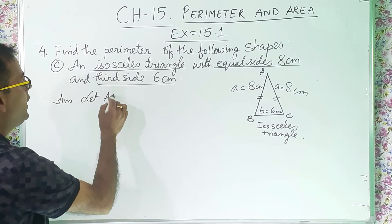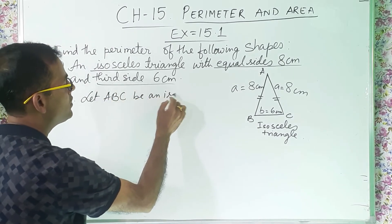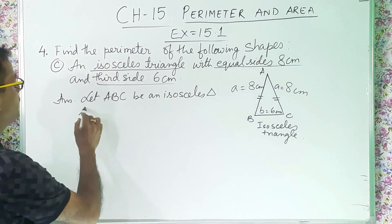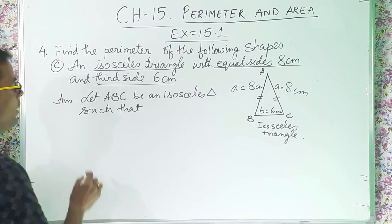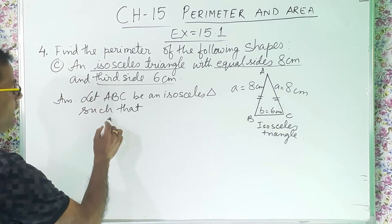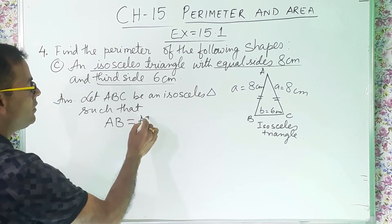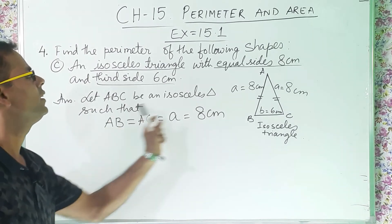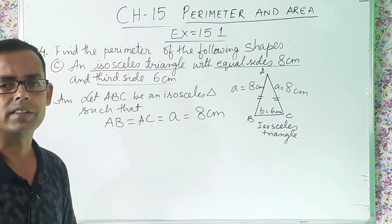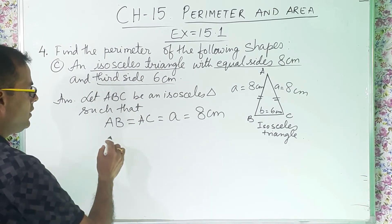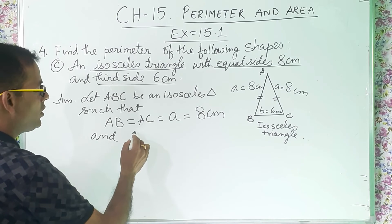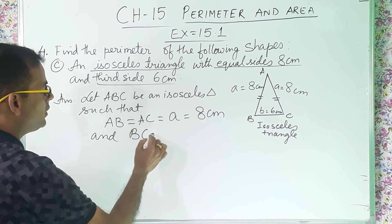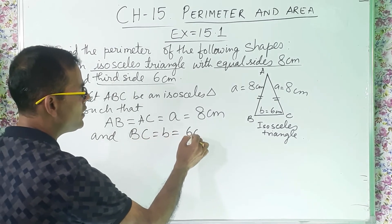Now I will write the answer. Let ABC be an isosceles triangle, like this also you can write, such that the two equal sides are what? AB equal to AC equal to small a equal to 8 centimeter. And the third side is what? Small b. Or you can write here, and BC equal to small b equal to 6 centimeter.